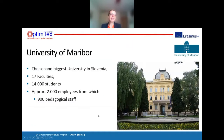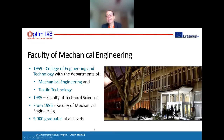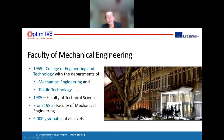Let me talk a little about our university. It is the second biggest university in Slovenia, with 17 faculties, over 14,000 students, and approximately 2,000 employees. You may ask why Faculty of Mechanical Engineering is involved. In 1959, our faculty was born as a College of Engineering and Technology with two departments: Mechanical Engineering and Textile Technology — that is why we are still in this faculty.